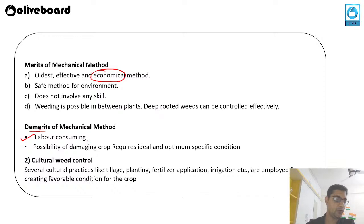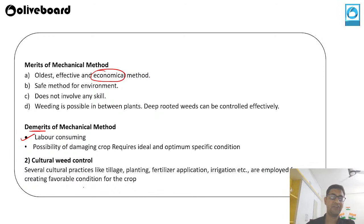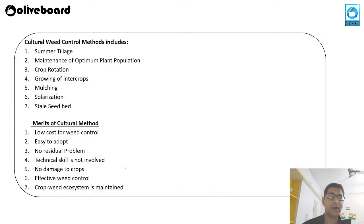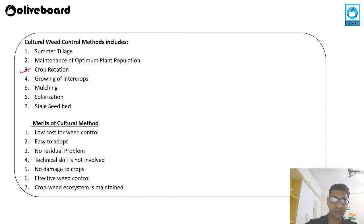The second type is cultural weed control, which uses several cultural practices like tillage, planting, fertilizer application, and irrigation to create favorable conditions for crops. Cultural weed control methods include summer tillage, maintenance of optimum plant population, crop rotation, growing of inter-crops, mulching, solarization, and stale seed bed.